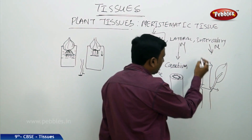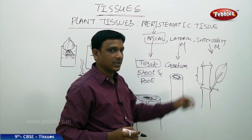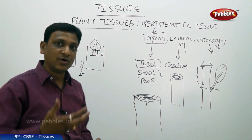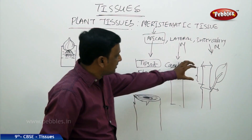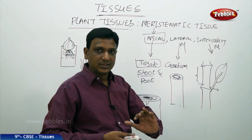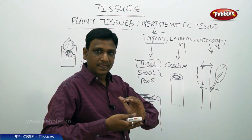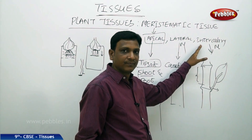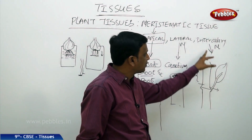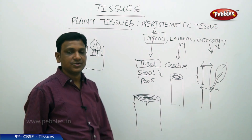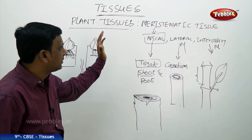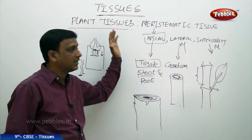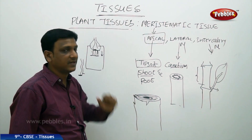The intercalary meristem helps in increasing the height of the plant by increasing the tissue between two nodes. The space from one node to another node is increased by the intercalary meristem. It is also found at the base of the leaf. The key idea is that actively growing cells form a tissue called the meristematic tissue.